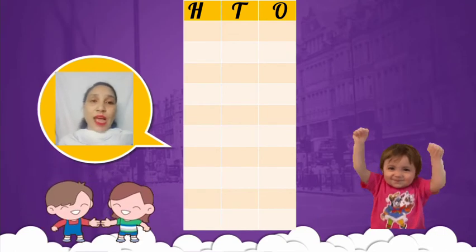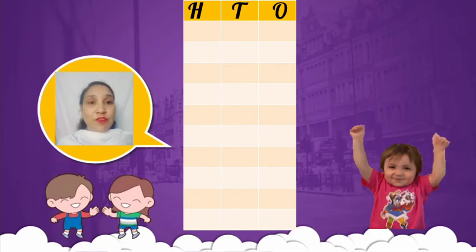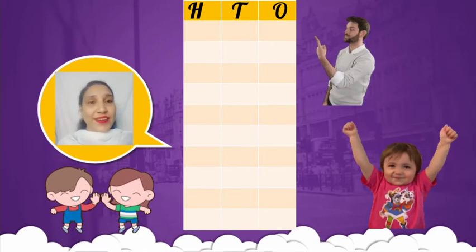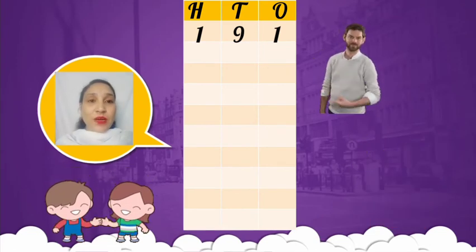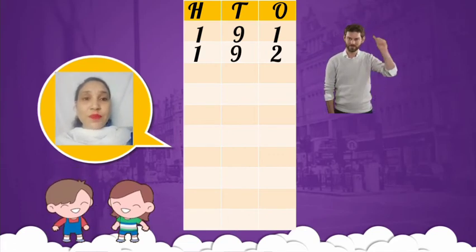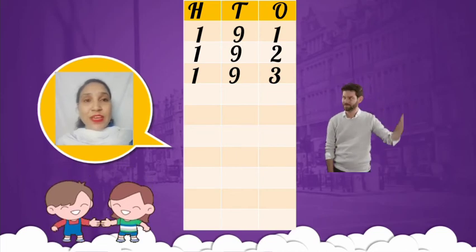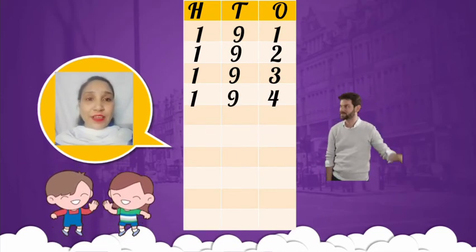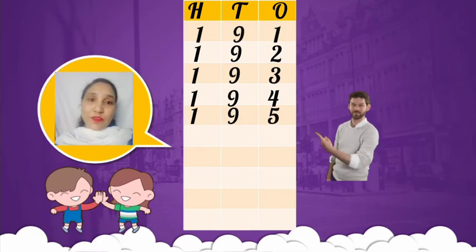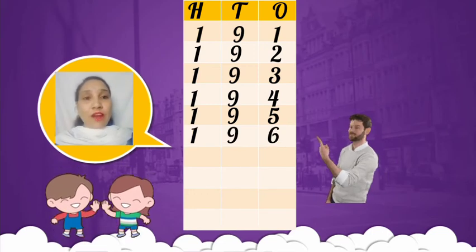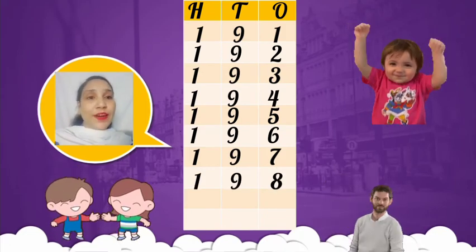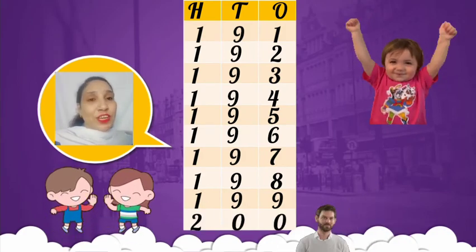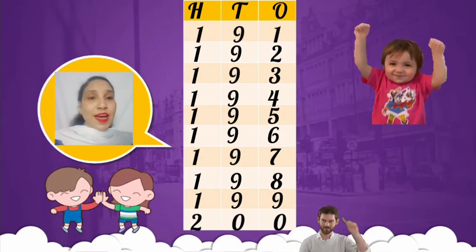What comes after 190? We have to write down the number which comes after 190. That is 191. So we will write here 191. After that comes 192. After 192 comes 193. The next number will be 194. After that comes 195. Next number will be 196. Next number after 196 comes 197. After 197 comes 198. Next number will be 199. Now, what should I write here? We should write here 200. This is our last number.